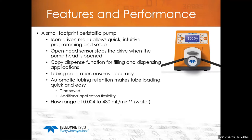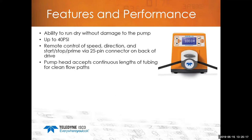Flow range is up to 480 mL/min — based on a size 16 hose, water, average roller speed, and a pressure of about 30 PSI. The pump can run dry without damage because all it is doing is a roller squeezing a hose — if nothing is in the hose, the roller still squeezes it. It can reach up to 40 PSI, and you can control it remotely via a 25-pin connector on the back for use with a control system. The pump head supports continuous length tubing.